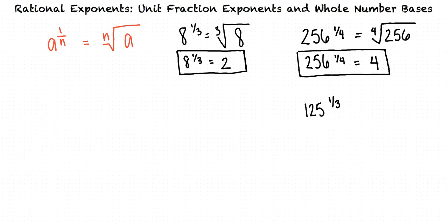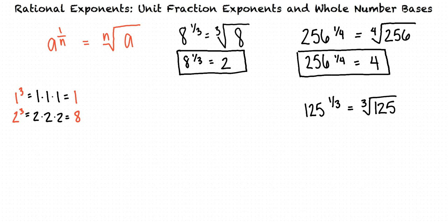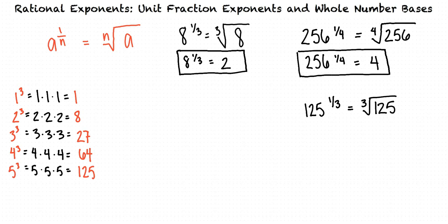Let's try just one more. Let's evaluate 125 raised to the power of 1 third. I can see that this is asking us to take the third root of 125. This means we need to list out some third powers of a few small integers: 1 to the third equals 1, 2 to the third equals 8, 3 to the third equals 27, 4 to the third equals 64, and 5 to the third equals 125. Since 5 to the third equals 125, this means 125 to the 1 third power equals 5.